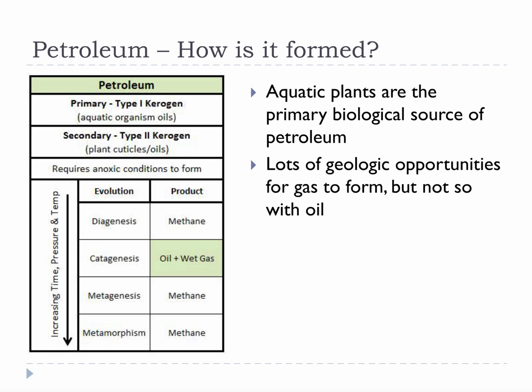However, aquatic organisms are a unique and convenient source of fatty acids, and lignin is a structural chemistry that isn't needed by cells floating in water. So, without getting into the chemistry too much, this means that oil is formed from a very unique class of aquatic organisms, not to be confused with terrestrial organisms — those that live on land.